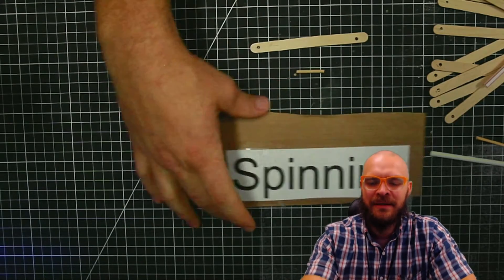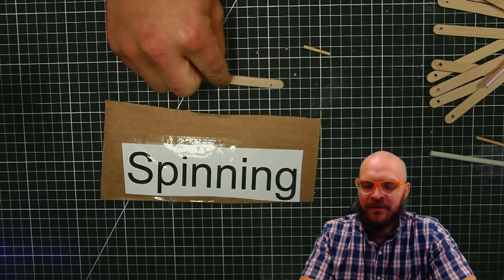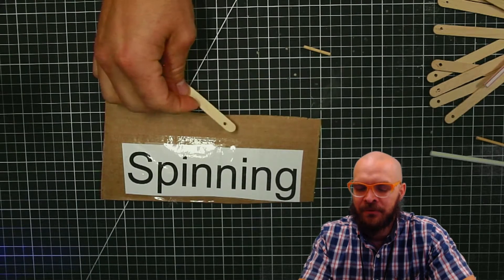Hey, this next one we're going to make the spinning piece. We need to have the piece that is going to be spinning—in this case it's a popsicle stick with a hole in it.